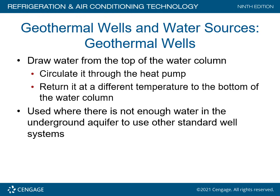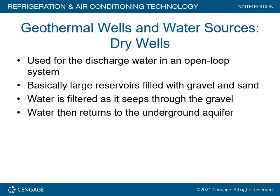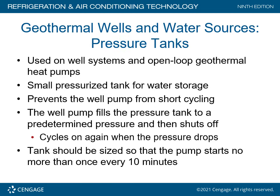Geothermal wells draw water from the top of the water column, circulate it through the heat pump, and return it at a different temperature to the bottom of the column. This is used where there is not enough water in the underground aquifer for standard well systems. A dry well is used for discharge of water in an open loop system — it is a large reservoir filled with gravel and sand, where water is filtered as it seeps through and is returned to the underground aquifer.